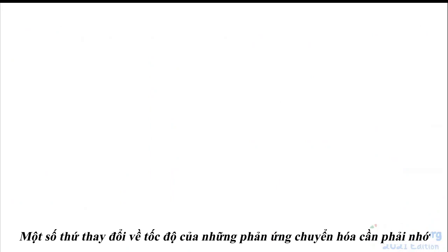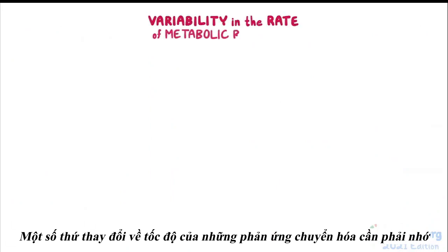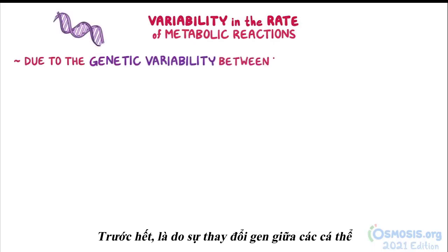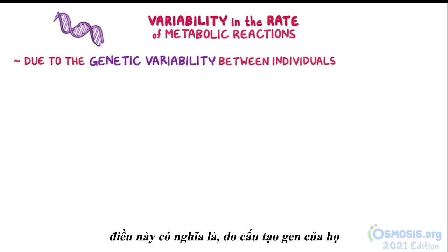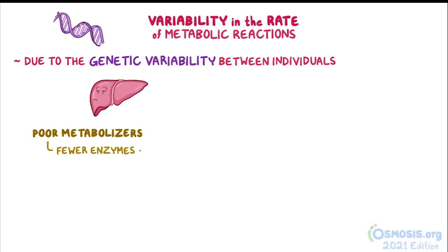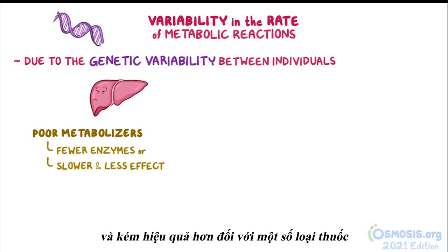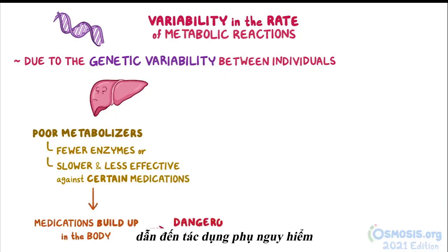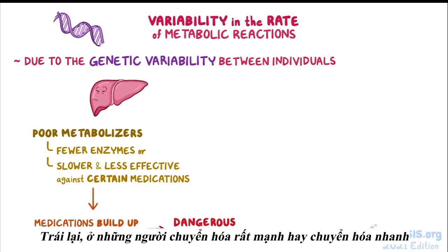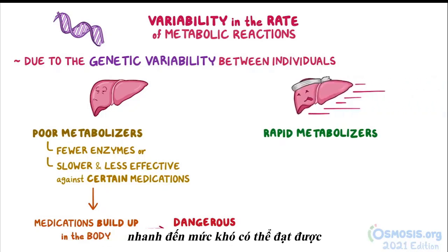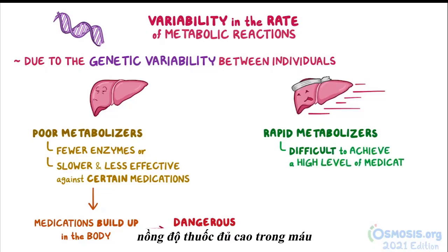There is huge variability in the rate of these metabolic reactions. First of all, this is due to genetic variability between individuals. Because of their genetic makeup, some people, known as poor metabolizers, have fewer enzymes, or enzymes that work more slowly and less effectively against certain medications — causing those medications to build up in the body and result in dangerous side effects. On the flip side, there are ultra or rapid metabolizers, whose enzymes metabolize and inactivate certain medications so fast that it's difficult to achieve a high enough level of medication in the bloodstream.